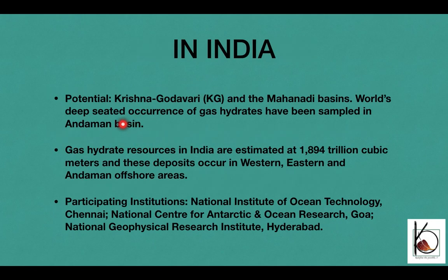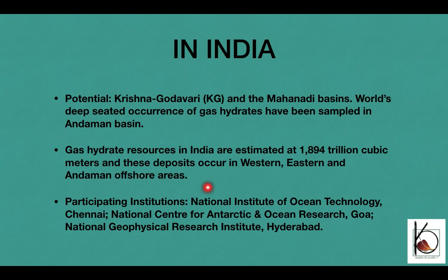To be more specific within India: Krishna Godavari basin, Mahanadi basin, and the world's deepest deep-seated occurrence of gas hydrate has been sampled in the Andaman basin. Bay of Bengal gas hydrate resources are estimated at 1,894 trillion cubic meters, covering the western, eastern, and Andaman offshore areas — so both coasts. The institutions in India working on exploration of gas hydrates are NIOT Chennai, NCAOR Goa, and NGRI Hyderabad. You can get a prelims question as a match-the-pairs on institution names and their locations.